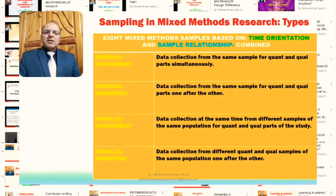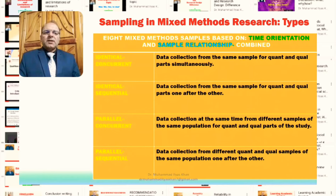The parallel concurrent design is where data collection happens at the same time from different samples of the same population — the population is the same but the samples are different, and data collection takes place simultaneously. The parallel sequential design is where data collection from different quantitative and qualitative samples of the same population happens one after the other — samples are different but the population is the same, and data collection happens sequentially.